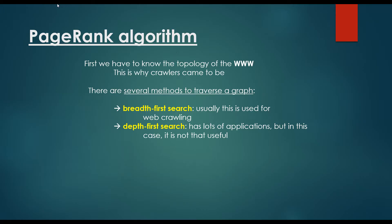First we have to know the topology of the World Wide Web, and this is why web crawlers came to be. There are several methods to traverse the graph. We need web crawlers because we don't know this directed graph at the beginning. We don't know the topology of the World Wide Web, so we have to make a graph traversal to find out this topology.